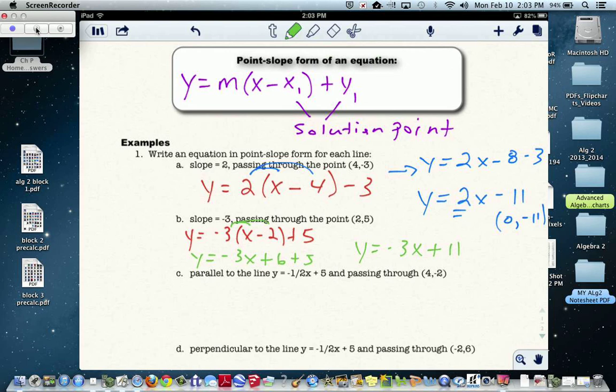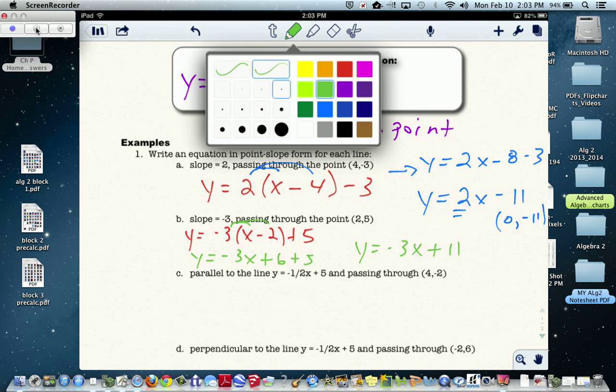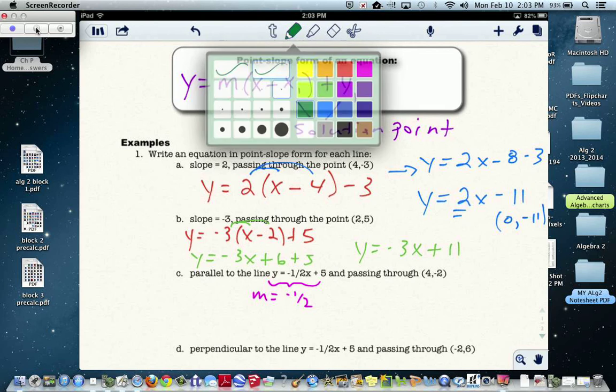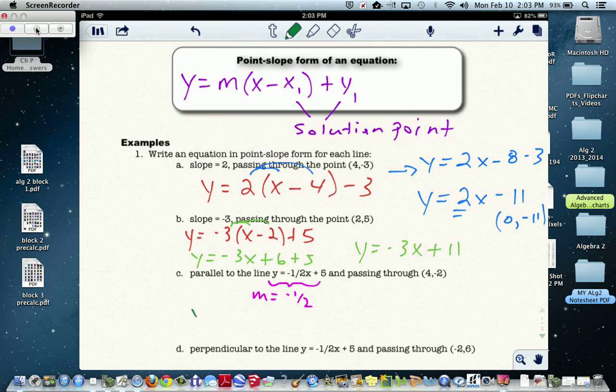What if they tell you to do a line that's parallel to the given line? So for this one, this line is given to us. Right now it has a slope of negative 1 half. Parallel means to use the same slope. So I'm going to write this as y equals -1/2 slope, x minus 4.